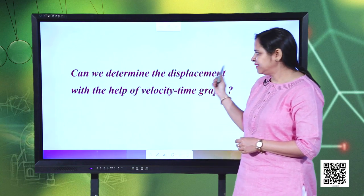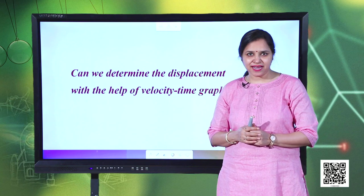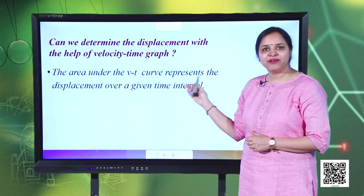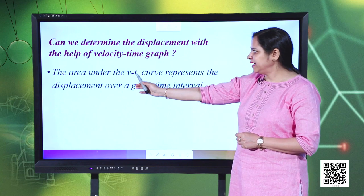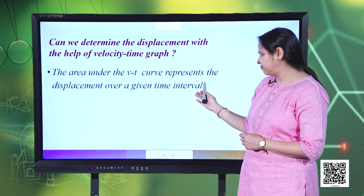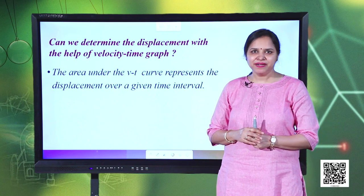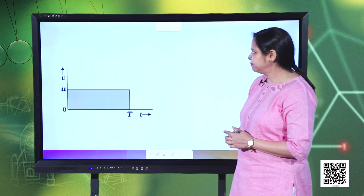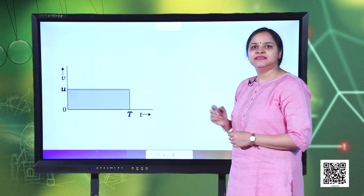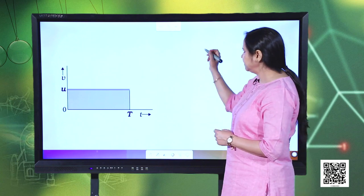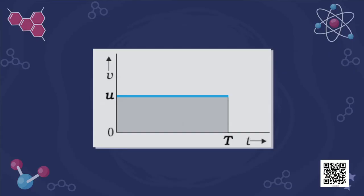Can we determine the displacement with the help of a velocity-time graph? Yes, of course. We can determine the displacement using a velocity-time graph by finding the area under the velocity-time curve. Let us see how, by taking a simple example. I consider a particle executing uniform motion, moving with a uniform velocity u,